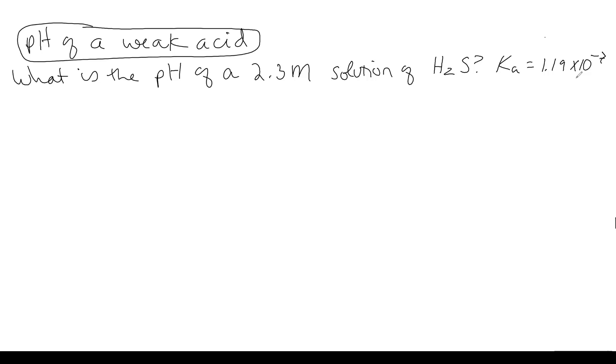And it's going to give you a Ka. It might give you a Kb. But you have a few hints here on what type of problem this is. One, here's your species that's dissolved in solution and it is an acid. And it is not on your strong acid list.